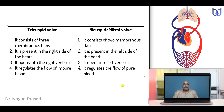Differences between tricuspid valve and bicuspid valve — note that the bicuspid valve is also called the mitral valve. The tricuspid valve consists of three membranous flaps while the bicuspid valve consists of two. The tricuspid valve is present on the right side of the heart; the bicuspid valve is on the left side. The tricuspid valve opens into the right ventricle; the bicuspid valve opens into the left ventricle. The tricuspid valve regulates the flow of impure blood while the bicuspid valve regulates the flow of pure blood.